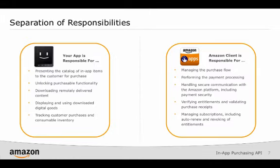When your app makes a purchase through the In-App Purchasing API, there is a defined separation of responsibilities. Your app is responsible for presenting a catalog of in-app items to the customer for purchase, unlocking purchasable functionality, downloading remotely delivered content, displaying and using downloaded digital goods, tracking customer purchases, and inventory of consumable items. The In-App Purchasing API calls invoke the Amazon App Store client on the device, which is responsible for managing the purchase flow, performing payment processing, handling secure communication with the Amazon platform including payment security, verifying entitlements and validating purchase receipts, managing subscriptions including auto-renew, and revoking of entitlements.